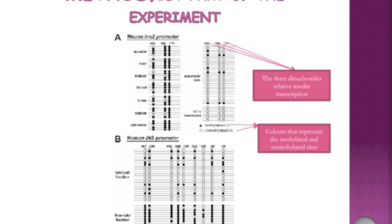To test whether or not the CpG sites have a specific methylation pattern in pancreatic beta cells, we compared the methylation patterns with those of various other tissues and with the NIT1 mouse insulinoma cells. The DNA samples were bisulfite-treated and analyzed by methylation-specific PCR followed by sequencing.